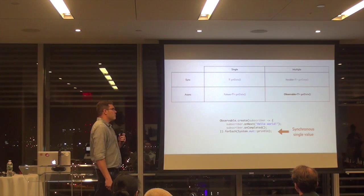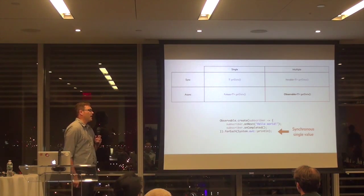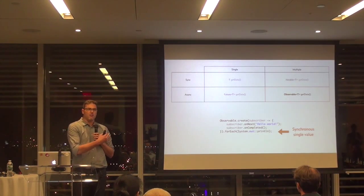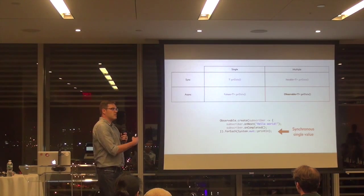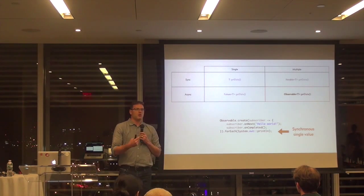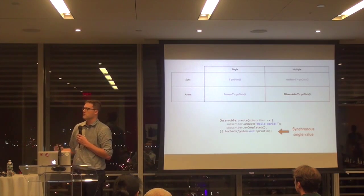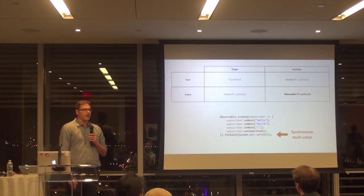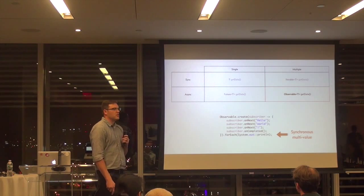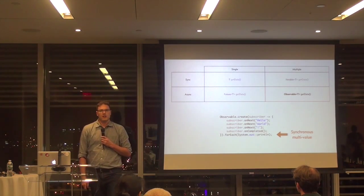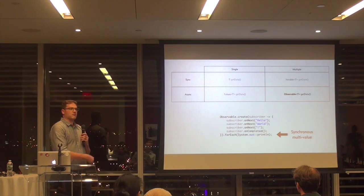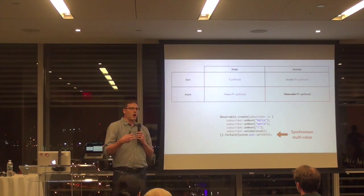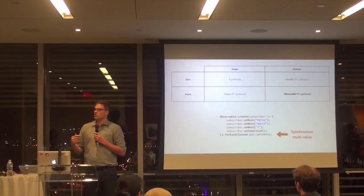The most basic hello world in Java 8 looks like this: you emit one value and you complete. That behaves similarly to a future — scalar, one value, it completes — the only difference being it's lazy. You can subscribe to it as many times as you want. For a multi-value response, each time I subscribe I get three values out. This is still synchronous — there's absolutely no concurrency going on unless you opt into it with schedulers.